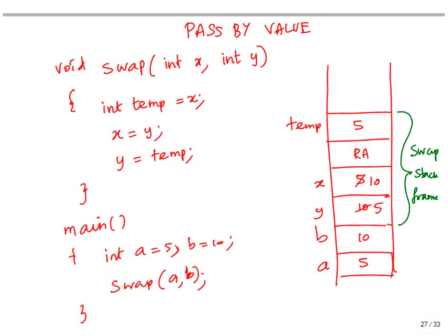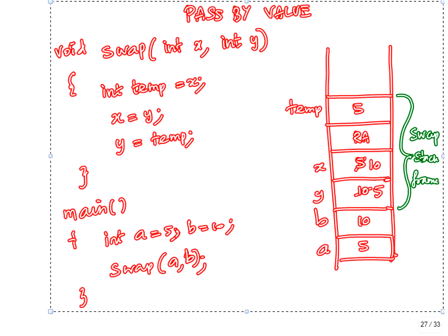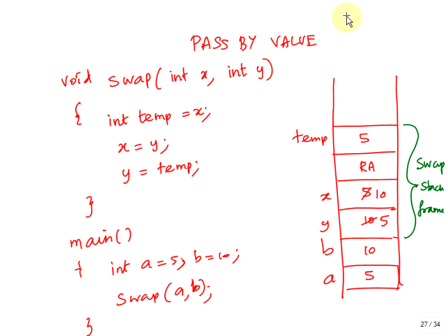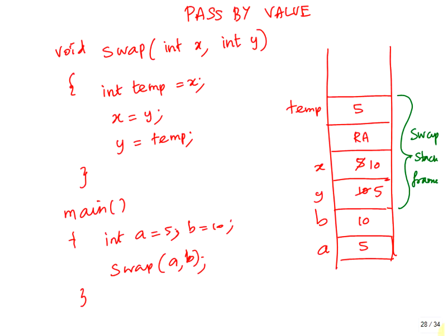Temp = x, so temp is 5. Then x = y, which is 10. Y = temp. X and y have been swapped, but when you come back to main, a and b have no effect. This is pass by value — since we are really passing in the values, we have no impact on the original variables.